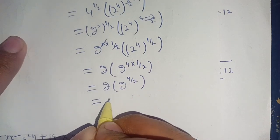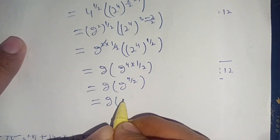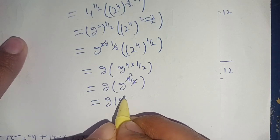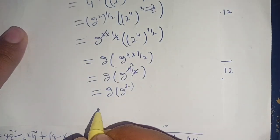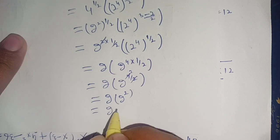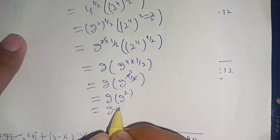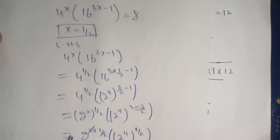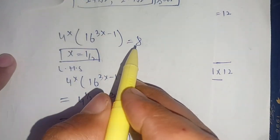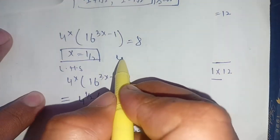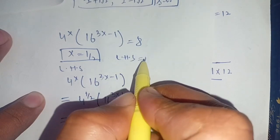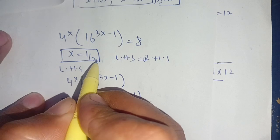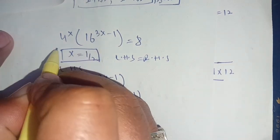This equals 2 times 2^2, which is 2 times 4, equal to 8. Our right hand side is also equal to 8. Thus the left hand side equals the right hand side, which confirms that x = 1/2 satisfies our equation.